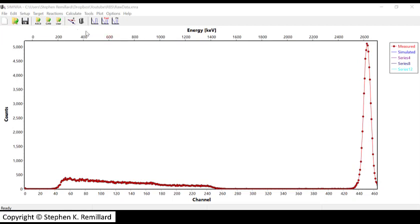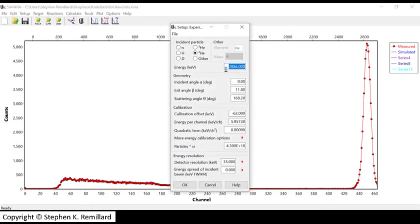This has to be populated with setup information now. You have these two icons here. The actual experiment setup is this one. Let me put in some information. Helium-4 isotopes, the energy that we have been using is 2886. If you don't know exactly what it is, you can figure out what this energy is by looking at where your edges are.